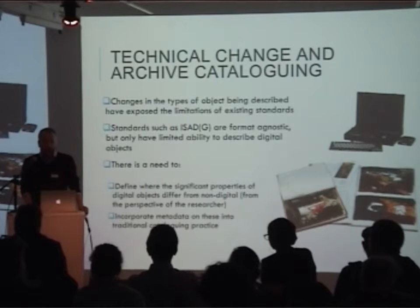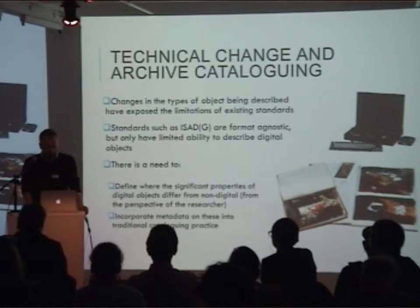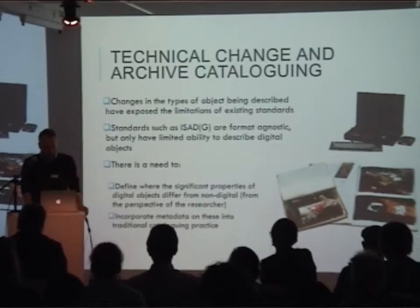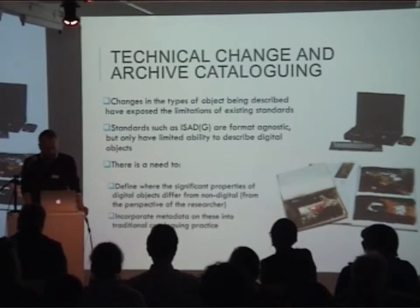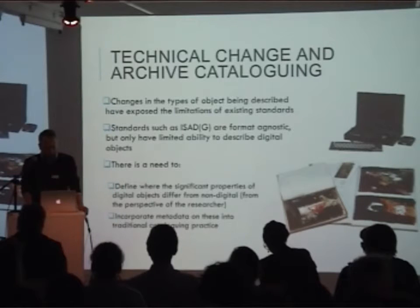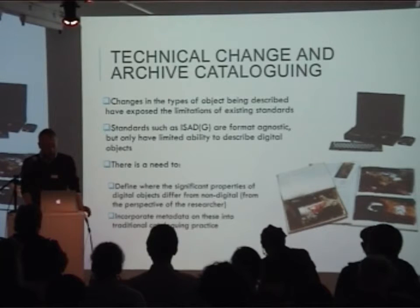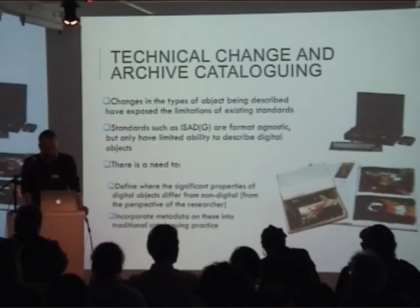Although many elements of a standard such as ISAD-G — the International Standard for Archival Description — are still relevant to digital material, there is additional information it cannot capture. For example, ISAD-G allows for two types of date: dates when records were accumulated or used, and dates when documents were created. This becomes more complex with digital material — a letter in the form of a word-processed file can have several dates, including the file creation date, the file modified date, any date given in the text of the document itself, as well as other dates recorded in the metadata. Any or all of these may affect the way the document is interpreted.